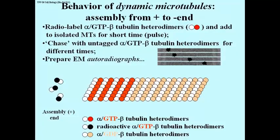During the chase period, the microtubule grows by adding non-radioactive heterodimers. If you sample microtubules at different times during the chase and make autoradiographs, right after the pulse you would see dark silver grains at one end of the microtubule — most microtubules will be labeled at an end.